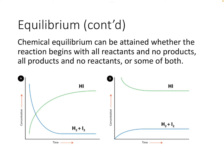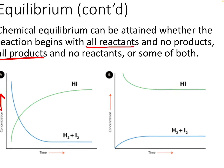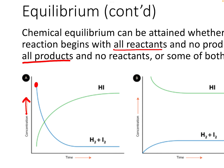Chemical equilibrium can be attained whether the reaction begins with all reactants and no products, or all products and no reactants, or some of both. Down below, instead of the rate of reaction on the y-axis, we have concentration. Let's say we start with a really high concentration of hydrogen and iodine. As the reaction proceeds, we're going to see a decrease in the concentration because it's all getting used up. And as we start to form the product, HI, that concentration is going to increase. Eventually we're going to hit a point where the concentrations stop changing — the concentration of the reactants will stay the same, and the concentration of the products will stay the same. And that's equilibrium.